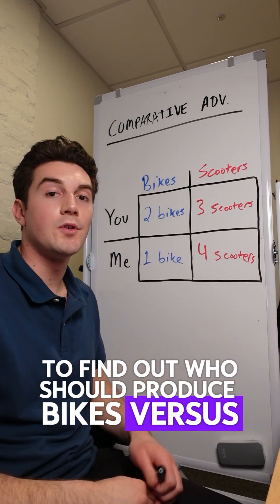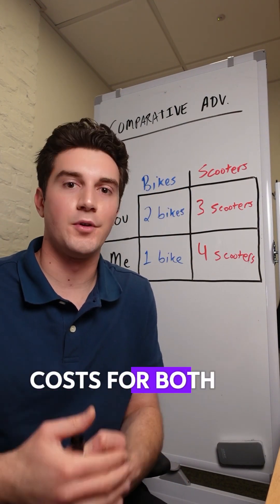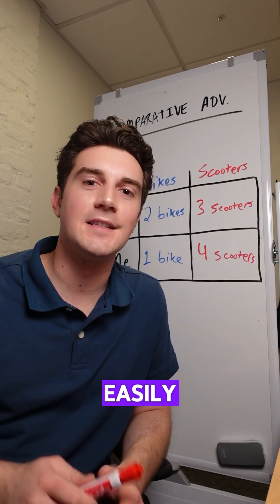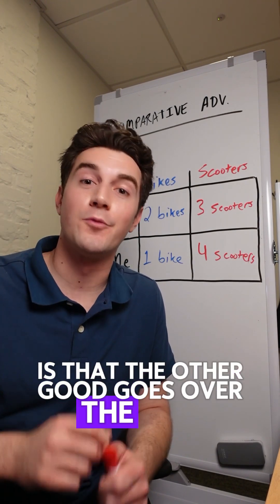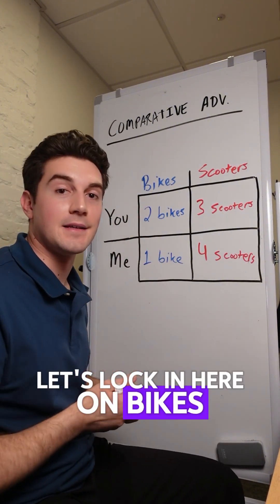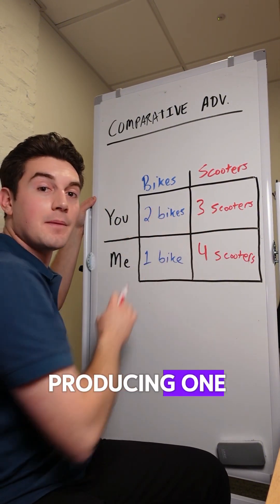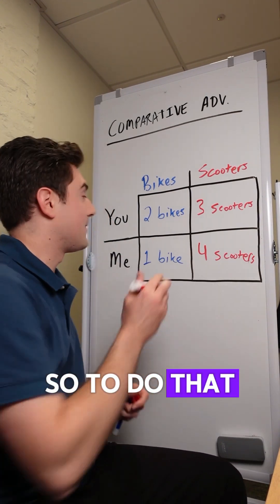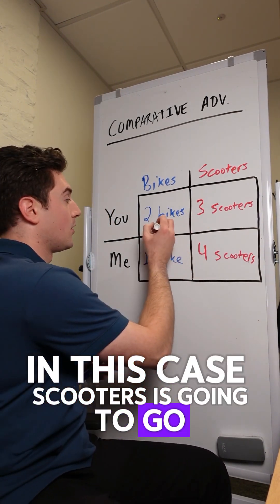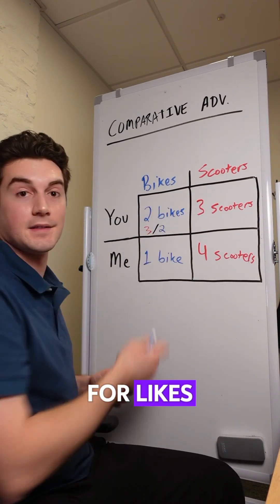To find out who should produce bikes versus scooters, we got to calculate the opportunity costs for both of us. And the best tip I have for solving this easily is that the other good goes over the one you're calculating for. Let's lock in here on bikes. We got to figure out how many scooters producing one bike costs you. So the other good — in this case scooters — is going to go over the good you are calculating the opportunity cost for, bikes.